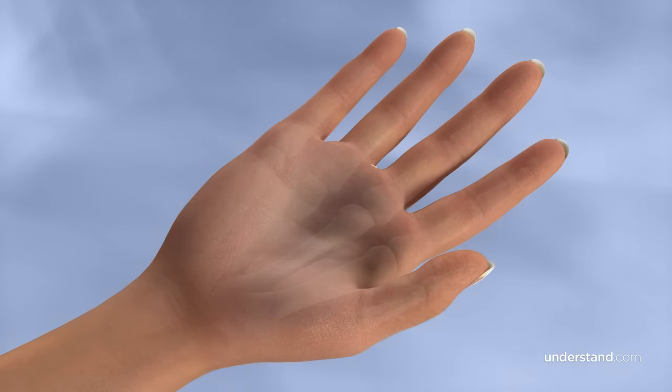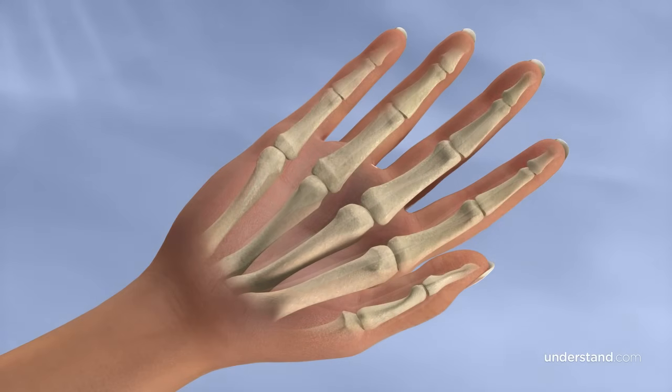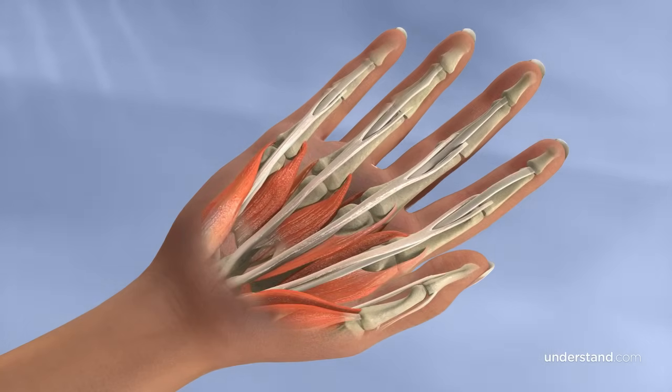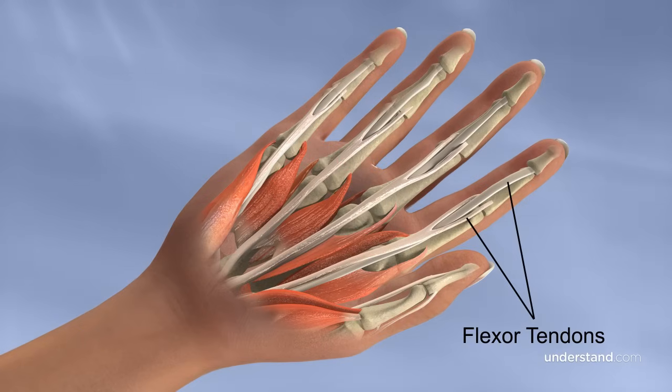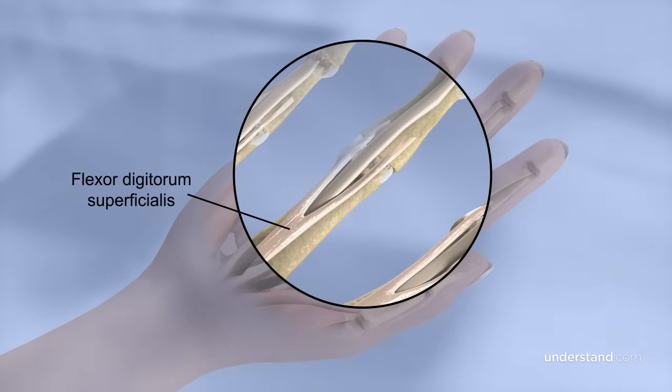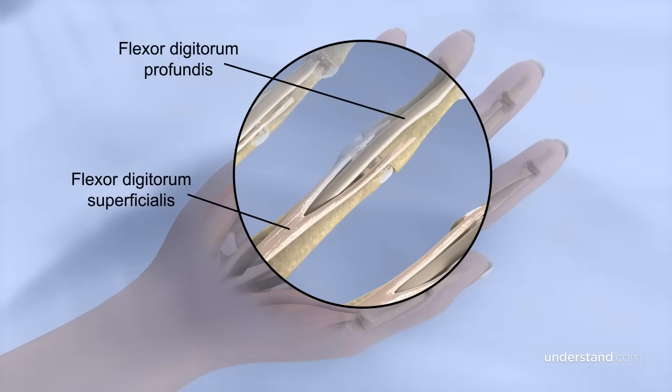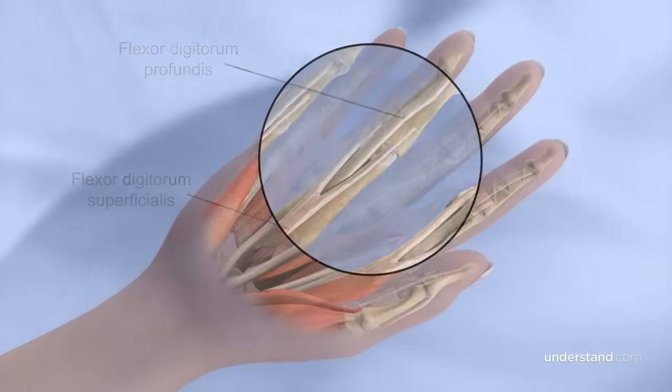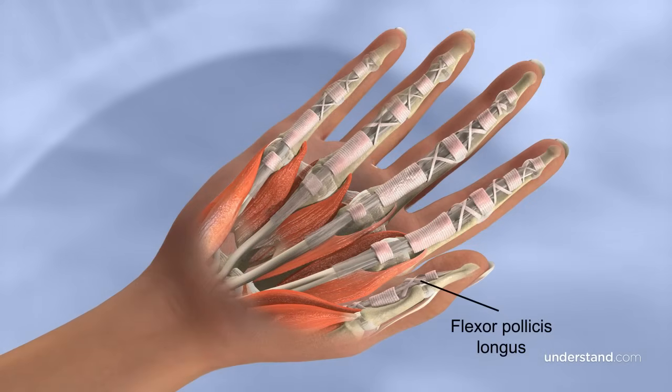The main force for the ability to bend or flex the fingers is provided by muscles in the forearm that connect to the finger bones with tough bands of tissue called tendons. Each finger has two flexor tendons, and the thumb has one. The flexor digitorum superficialis flexes the middle finger joint. The flexor digitorum profundus controls flexion of the entire finger. The flexor pollicis longus controls thumb flexion.